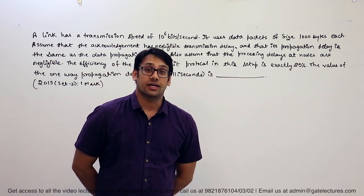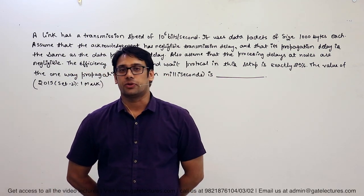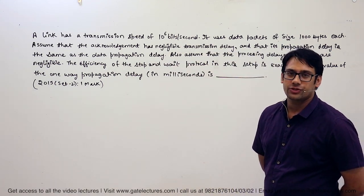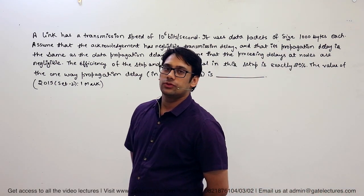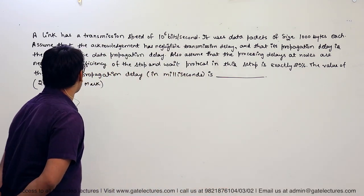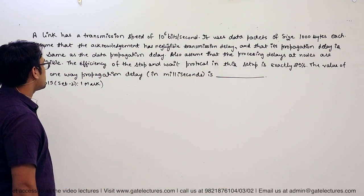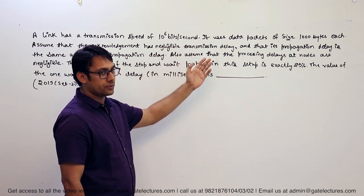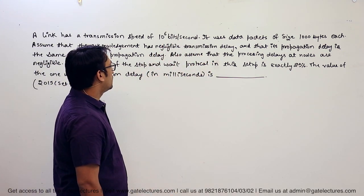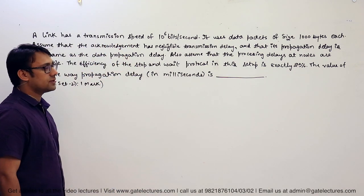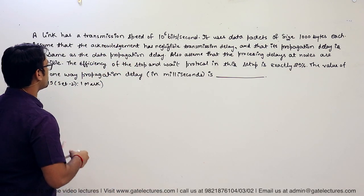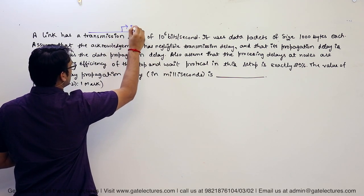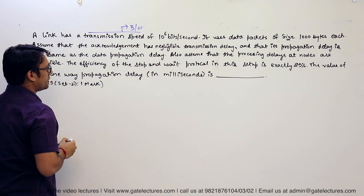Now let us look at this question. This is again a very interesting question and it is very much related to the previous question. Let us read the problem first: a link has a transmission speed of 10 raised to power 6 bits per second — that is the transmission speed, or bandwidth.